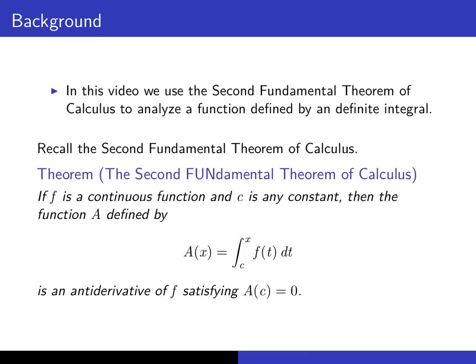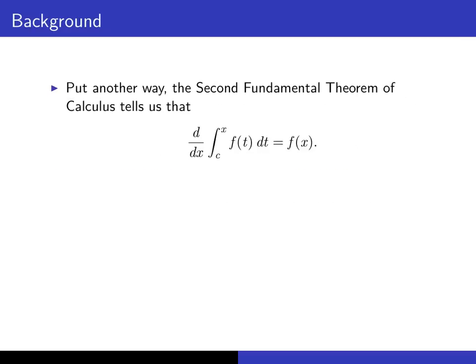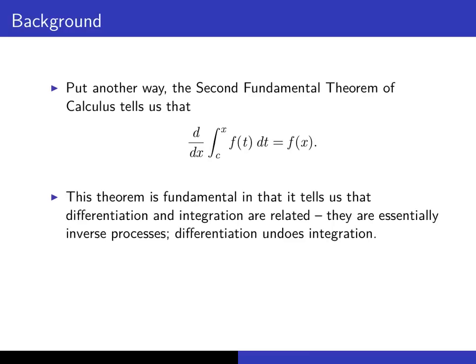As a reminder, recall that the second fundamental theorem of calculus says that if we integrate f(t) dt on some interval from a constant c to a variable x, then we get an anti-derivative of f that passes through the point (c, 0). Put another way, the second fundamental theorem tells us that if we differentiate an integral function, we get back the integrand. This theorem is fundamental in that differentiation and integration are closely related — differentiation here undoes integration, so differentiation is basically the inverse of integration.